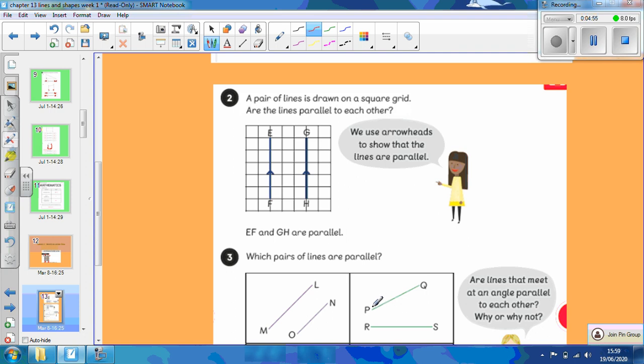But the lines PQ and RS are not parallel to each other. If we were to carry them on, can you predict where they would meet? So let's do it. So this line will carry on roughly in this direction, like so. And this line will carry on in this direction, like so. So they are not parallel. They would eventually meet if we carried them on.